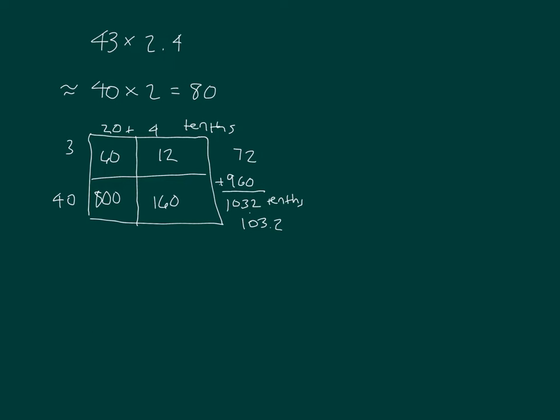Shrunk it so we can write out the standard algorithm. That's 24 tenths times 43. 3 times 4 is 12, 2, regroup of 1. 3 times 2 is 6, plus 1 is 7. Cross out the regroup. Place a 0.